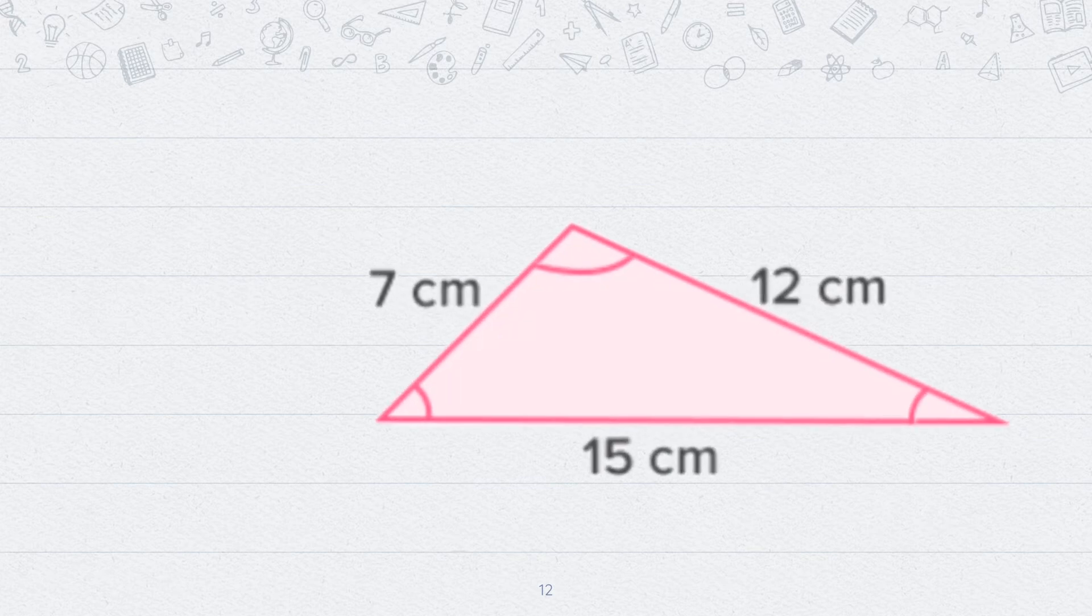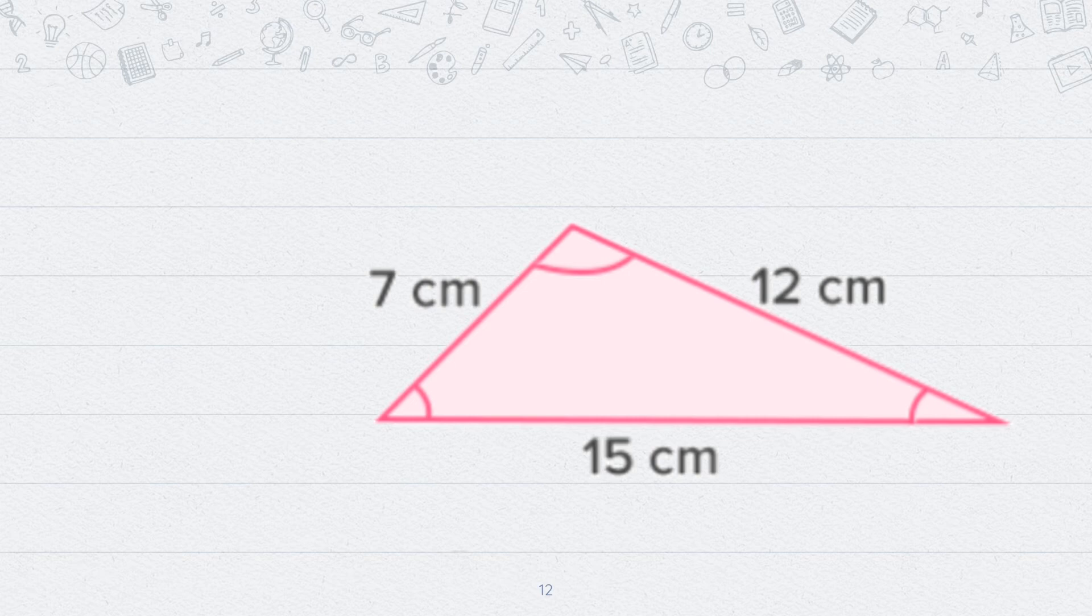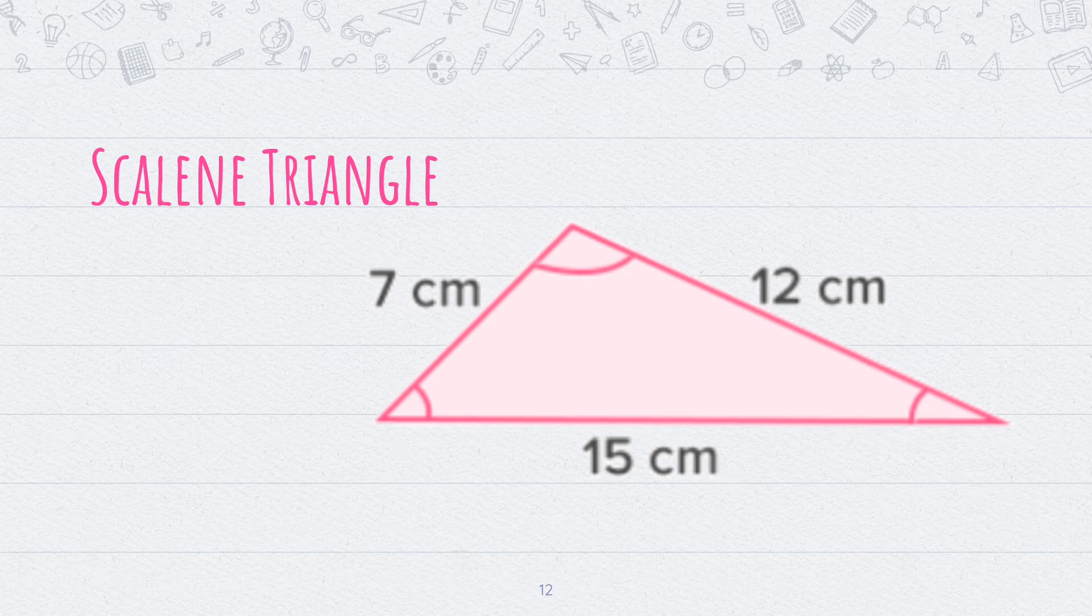Now look at this one. In this triangle, all the sides are of different length. One is 7 cm long. The other is 12 cm long. And the third one is 15 cm long. Such a triangle is called a scalene triangle. So, a scalene triangle is a triangle which has all sides of different length.